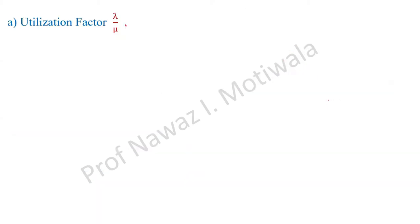The first formula is utilization factor rho, which is lambda by mu. Lambda is 8 and mu is 10, so it will be 8 by 10, which equals 0.8. Now, if the utilization factor is 0.8, what is the probability that the system is idle? It will be 1 minus 0.8, which is 0.2. Utilization factor of 0.8 means the system is busy 80% of the time, so it will be idle 20% of the time, or 0.2.